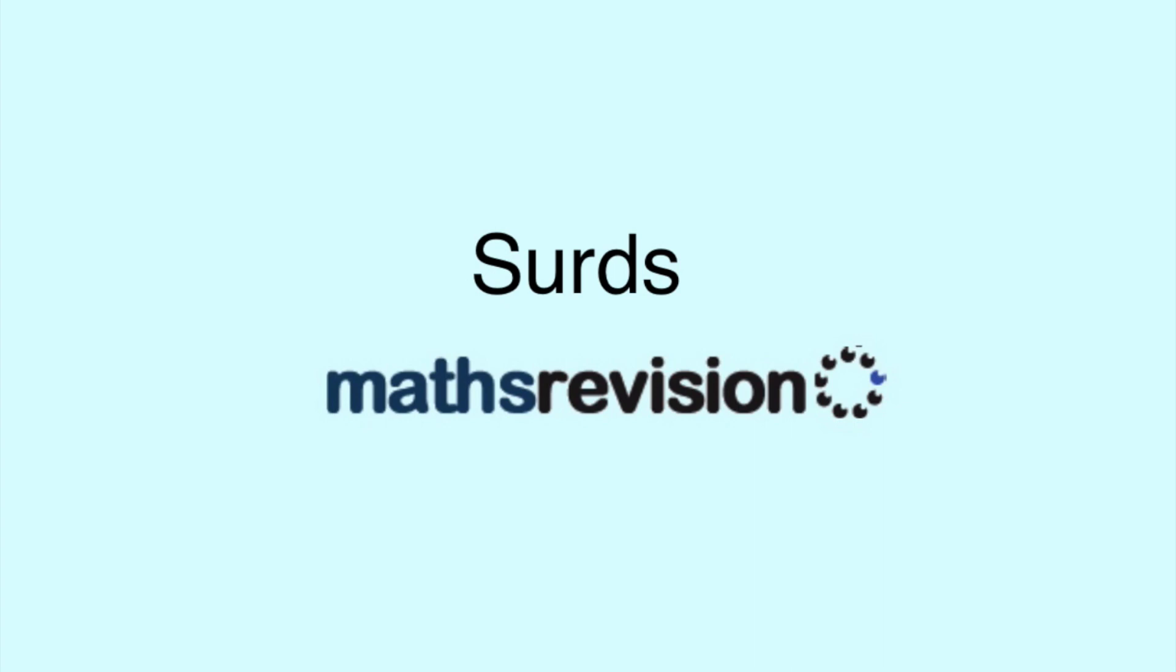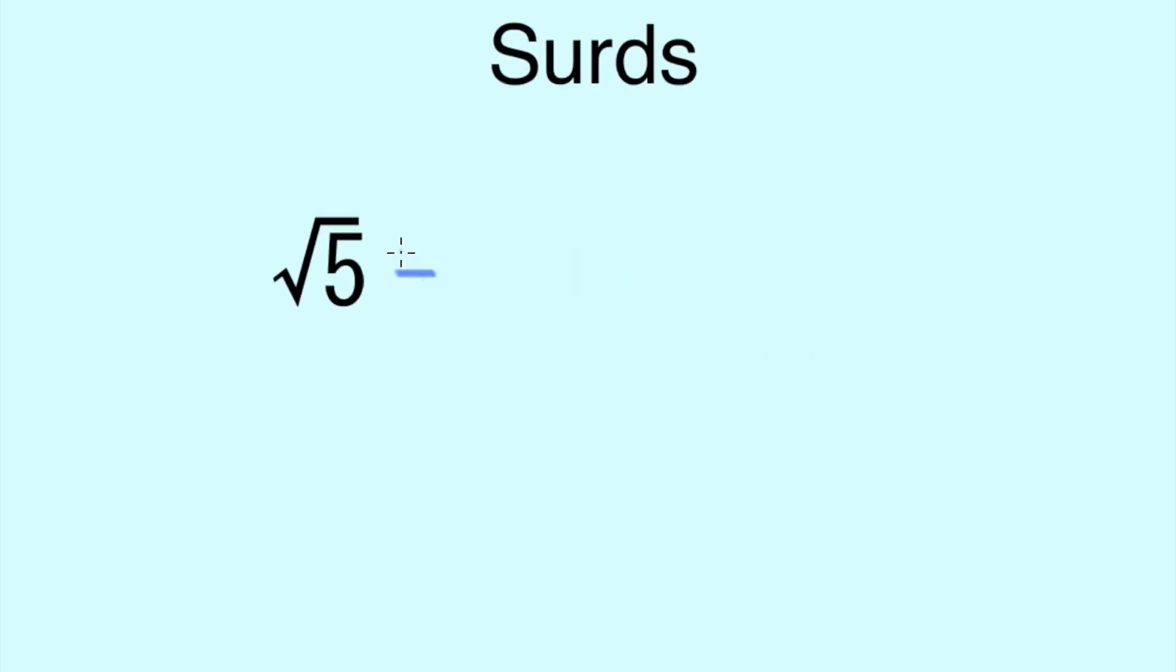Hi, and welcome to a MathsRevision.net video on surds. So what is a surd? A surd is a root of a number that doesn't give a whole number. A good example of a surd is √5, because the square root of 5 is 2.236067 and is an infinite decimal after that. So we tend to just stick with the square root of 5.